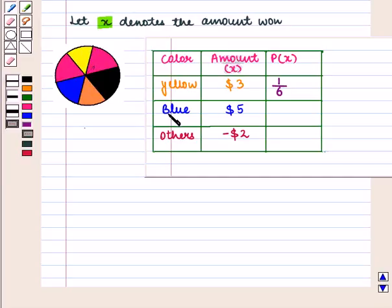Similarly, for color blue, the probability will be equal to 1 by 6 as there is one sector showing blue color, and for the remaining 4 sectors, the probability will be equal to 4 by 6.